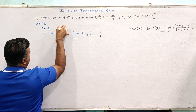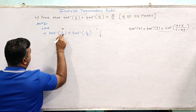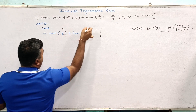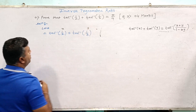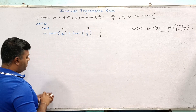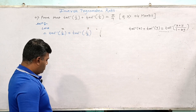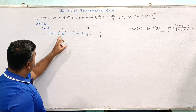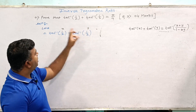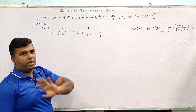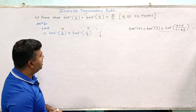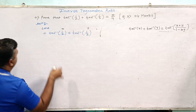Here, tan inverse x means x is equal to 1/2, and tan inverse y means y is equal to 1/3. We substitute these values into the formula.